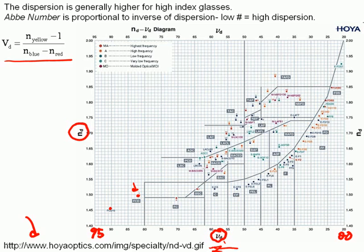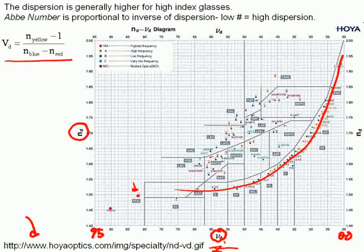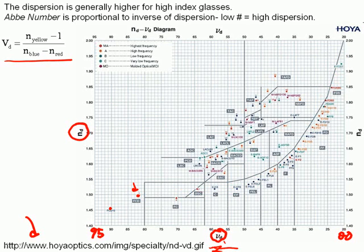And what you see, as a matter of fact, is that as the Abbe number decreases, the index of refraction generally goes up. In fact, these glass types make a curve that looks something like that. And you can see that higher index glasses have a lower Abbe number and generally higher dispersion.